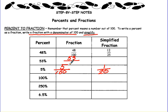53% means 53 out of 100, and it is already in simplest form, 53 out of 100.